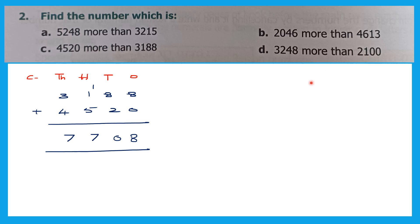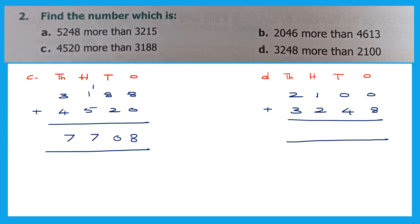Now question D: find the number which is 3,248 more than this number. Write the places: ones, tens, hundreds, thousands. Write 2,100 plus 3,248. 0 plus 8 is 8. 0 plus 4 is 4. 1 plus 2 is 3. And 2 plus 3 is 5. So we get 5,348.